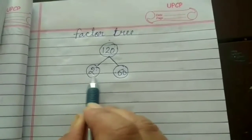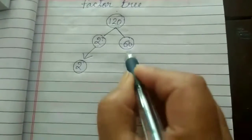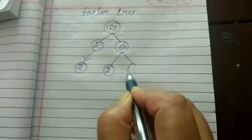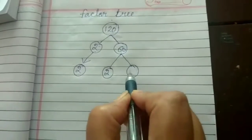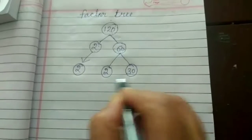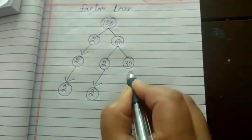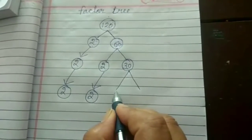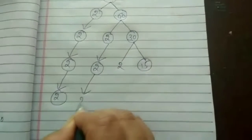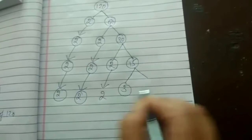2 is a prime number so you write 2 as it is. Now you have to write 60 in 2 parts: 2 multiplied by 30. Then write 30 in 2 parts: 2 multiplied by 15. Here you write 2 as it is.